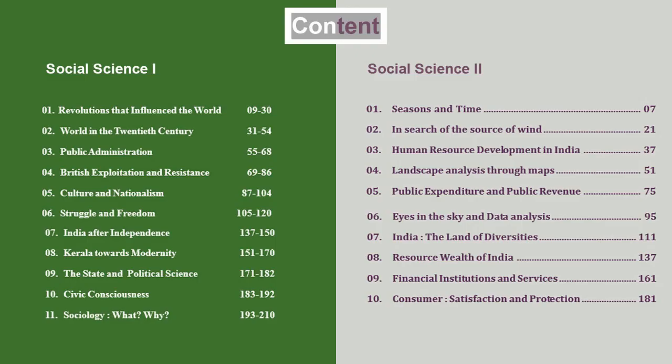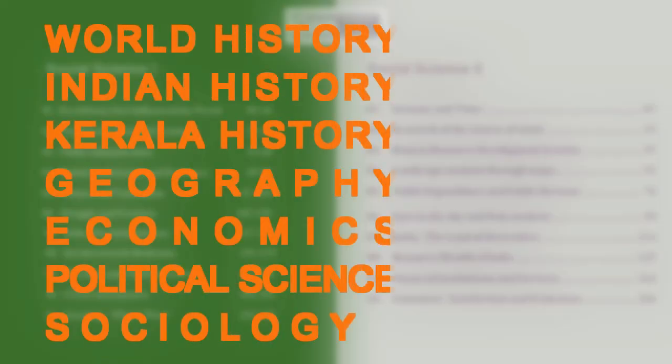This year we have 21 chapters to study — 11 chapters in the first volume and 10 chapters in the second volume. It includes world history, Indian history, Kerala history, geography, political science, economics, and sociology.